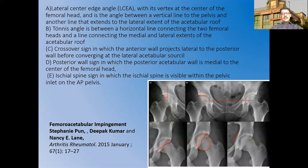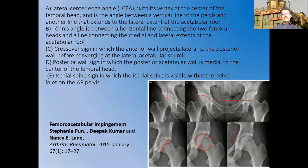For X-ray evaluation, the most important measurement is the lateral center edge angle (LCEA) — if it is increased, it is suggestive of femoroacetabular impingement. The Tönnis angle is between the horizontal line connecting the two femoral heads and the line connecting the medial and lateral extents of the acetabular roof. The crossover sign is when the anterior wall projects lateral to the posterior wall before converging into the lateral acetabular sourcil, suggesting increased anteversion and a pincer deformity. The posterior wall sign is when the posterior acetabular wall is medial to the center of the femoral head, also suggesting increased anteversion and pincer impingement.